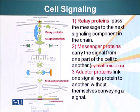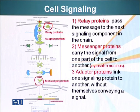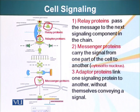Now let's look at the basic design of a signaling system and the roles intermediate proteins play. Relay proteins pass the message to the next signaling component in the chain. Messenger proteins carry the signal from one part of the cell — for example, from the cytoplasm to the nucleus. Adapter proteins, shown here as a green diamond, link one signaling protein to another without themselves carrying the signal; they are basically connectors that allow two signaling molecules to interact, with one passing the signal to the next protein.